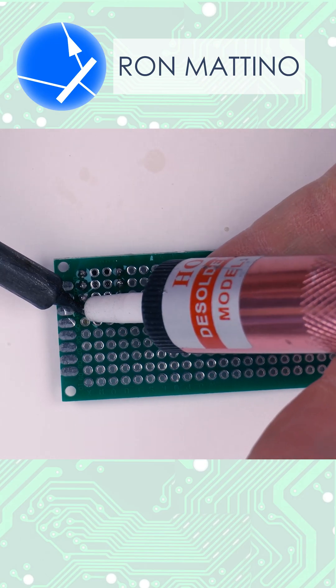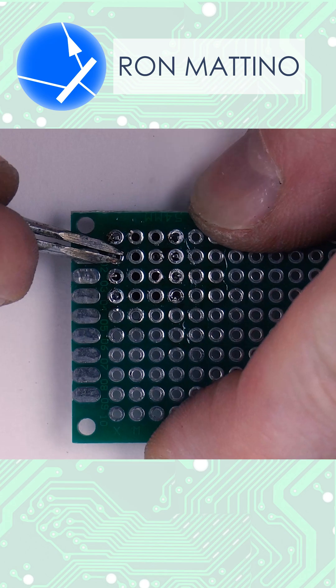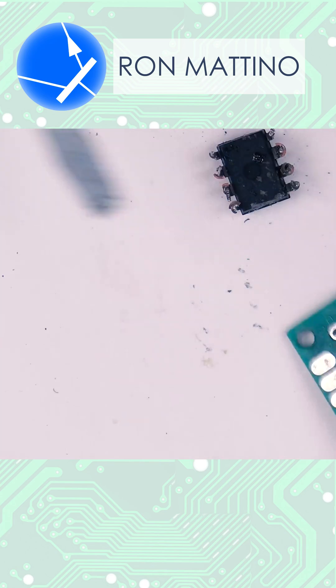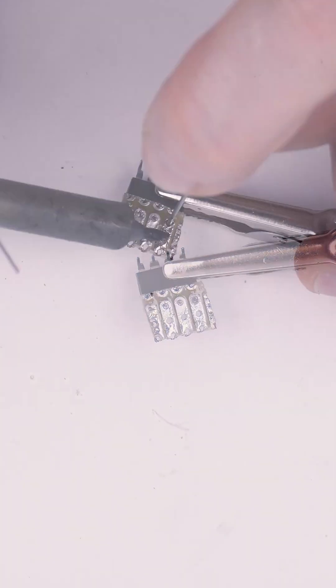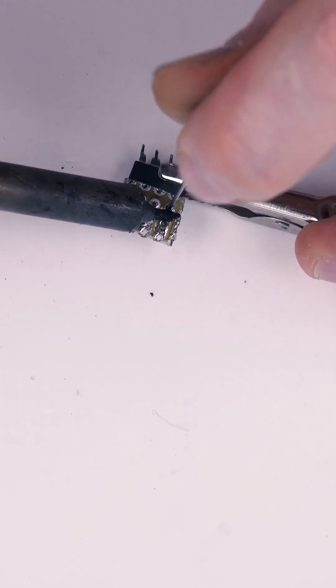When using a desoldering pump, wiggle the pins slightly to help them escape from a contact pad. If unsoldering a problem part takes time, don't forget to take breaks to let it cool down, lest you roast it. You can use a filed needle to unsolder deep ICs.